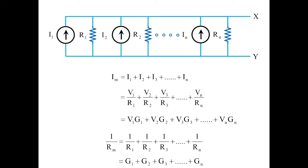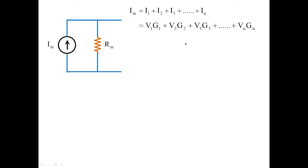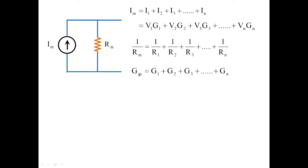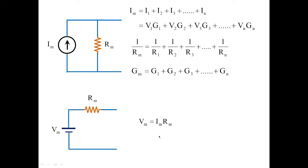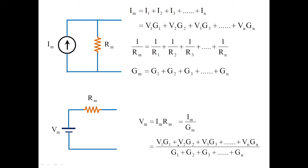Now let us see whether we can employ this theorem to solve different problems. First, finding the equivalent circuit: I obtained the values of Im and Gm, with Gm equal to 1/Rm. The parallel arrangement is changed to series where Vm equals Im multiplied by Rm, which equals Im divided by Gm. Once I obtain the values of Rm and Vm, I can easily find the Millman's equivalent circuit.